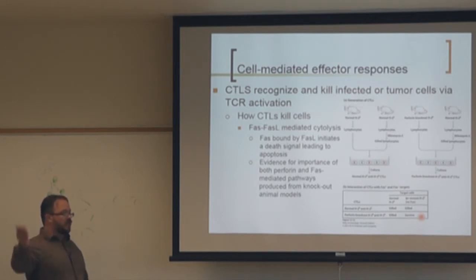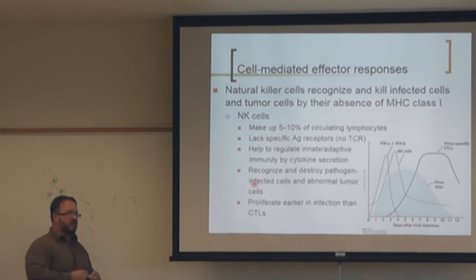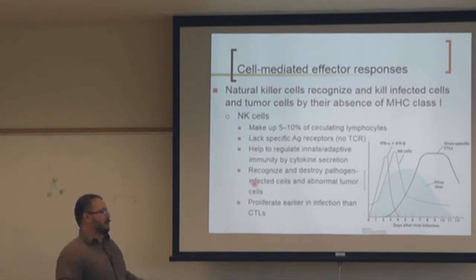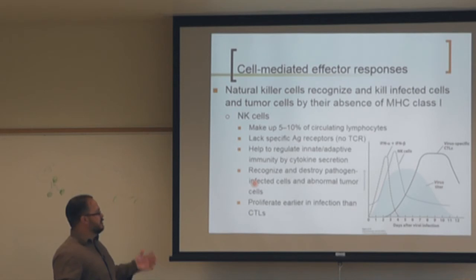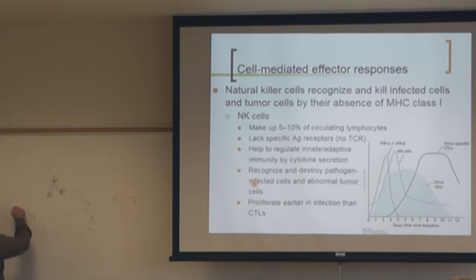Tumor cells and virally infected cells evade CTLs by downregulating MHC class I — without class I, the CTL can't see them. This is why we evolved NK cells: they specifically target cells that lack MHC class I expression. If a cell has high MHC class I with antigen, a CTL targets it; if it downregulates MHC class I, the NK cell kills it.